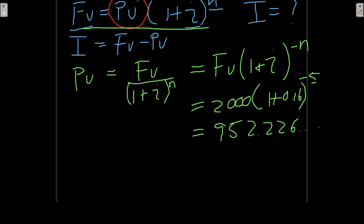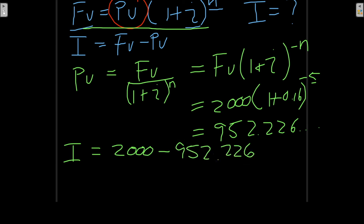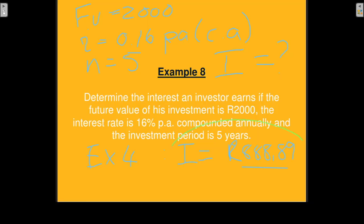From the calculated present value, the interest is the future value of 2,000 rands minus the present value, giving an interest of 1,047 rands and 77 cents. Comparing to the simple interest answer of 888 rands and 89 cents, the interest is more, as we expected.